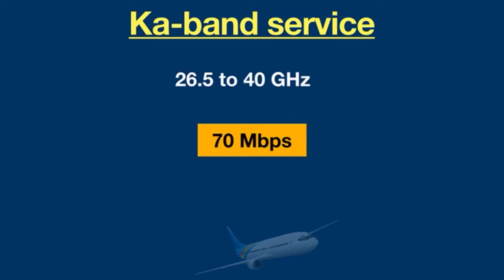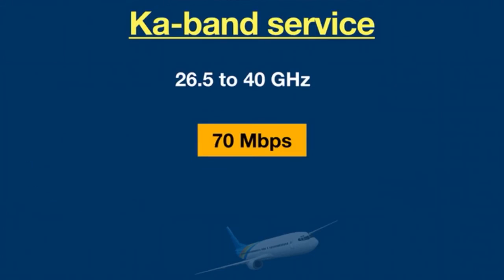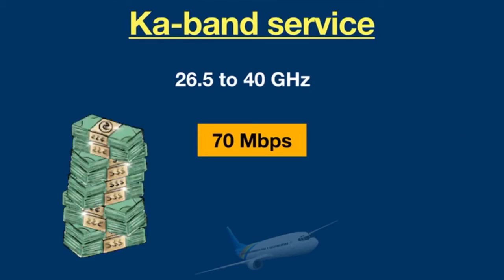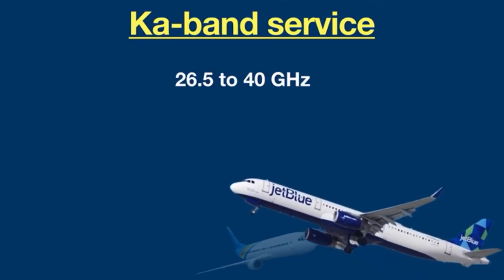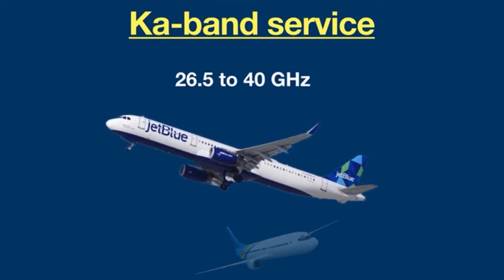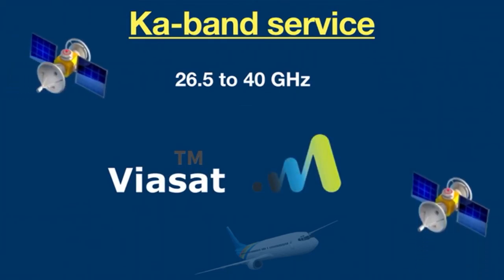This is similar to the speed someone enjoys with a home internet connection. However, there are significantly fewer Ka-band satellites in orbit with smaller geographical coverage, so it is only suitable for some airlines at the moment. This technology is also very expensive and therefore only available to those who can afford it. JetBlue is one such airline, using a Ka-band provider called ViaSat, which owns two satellites and is launching more.